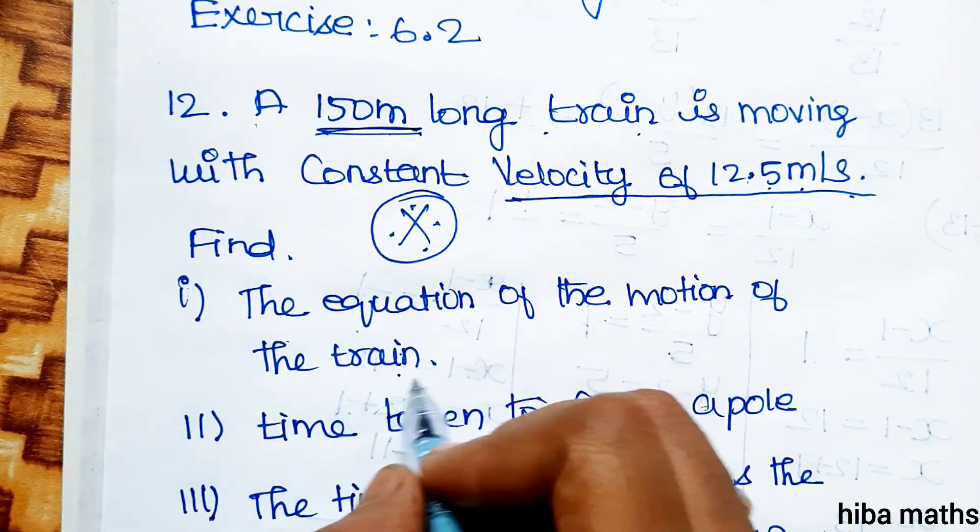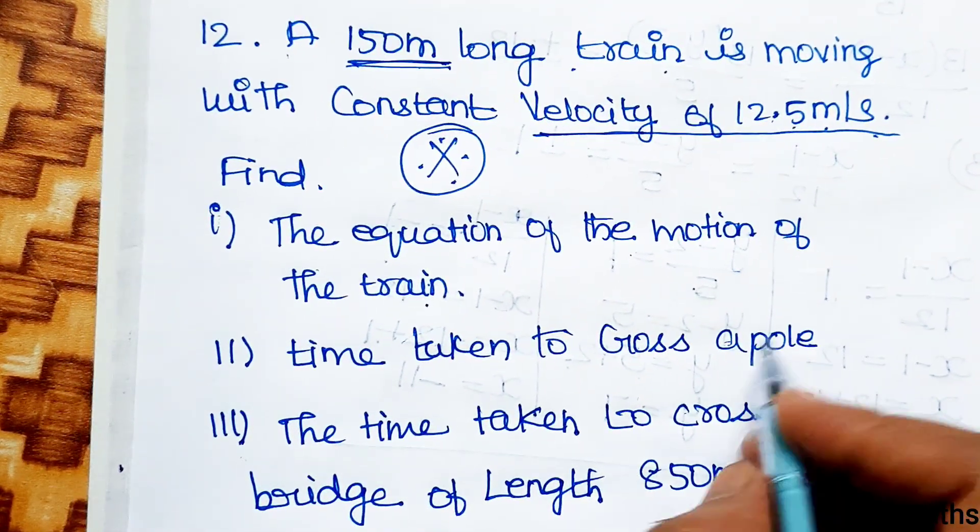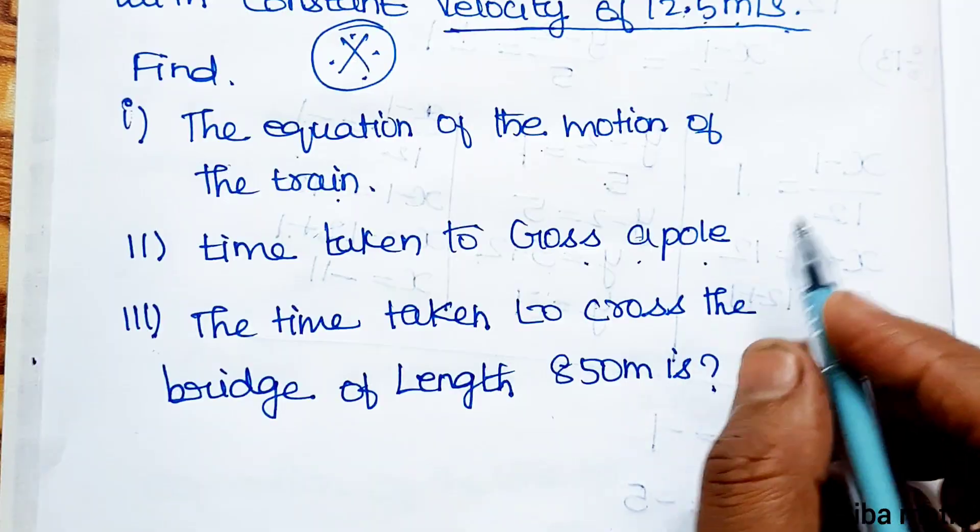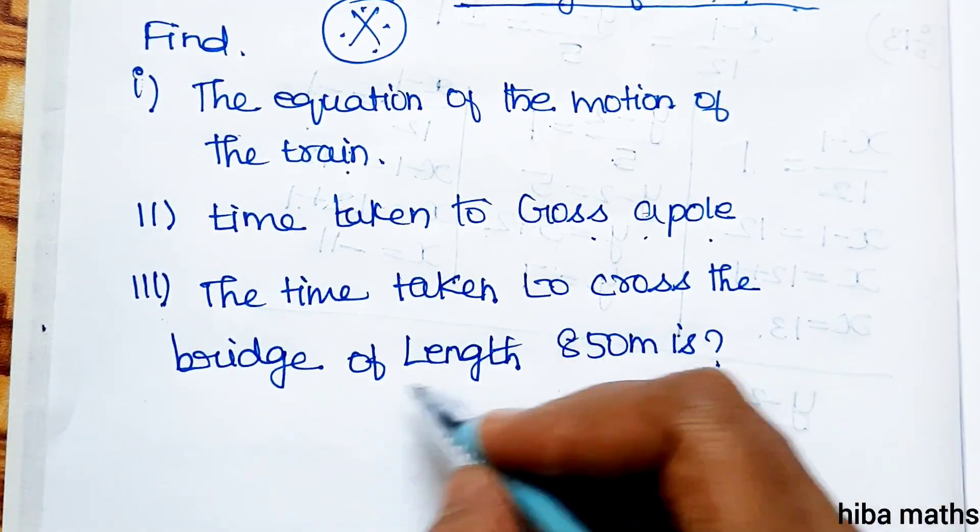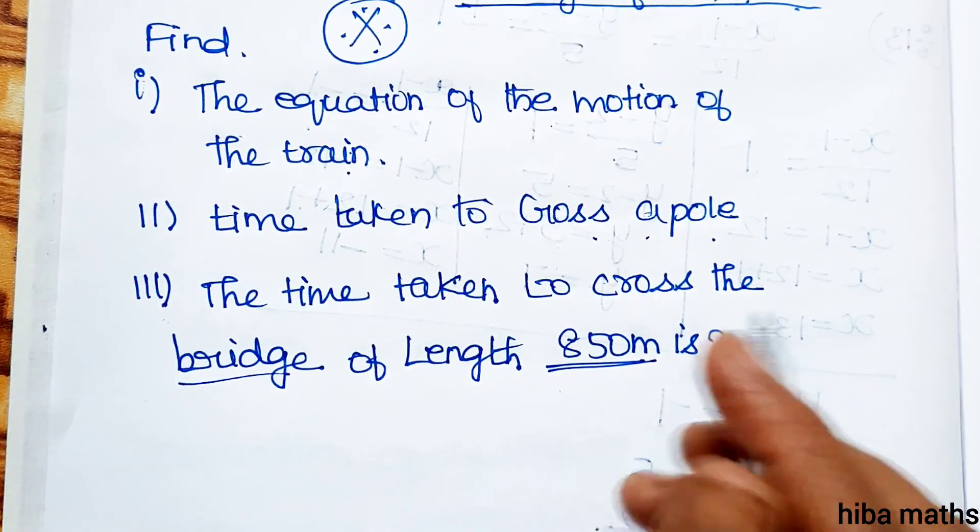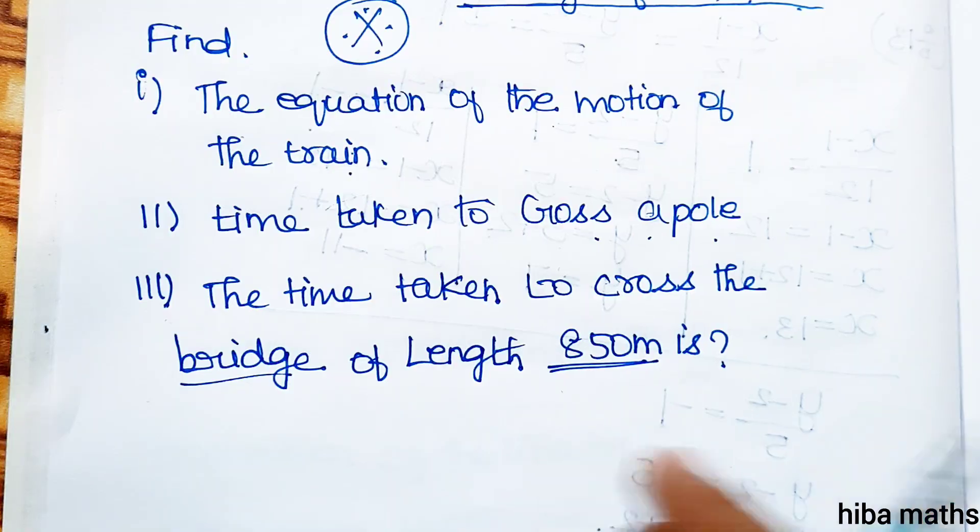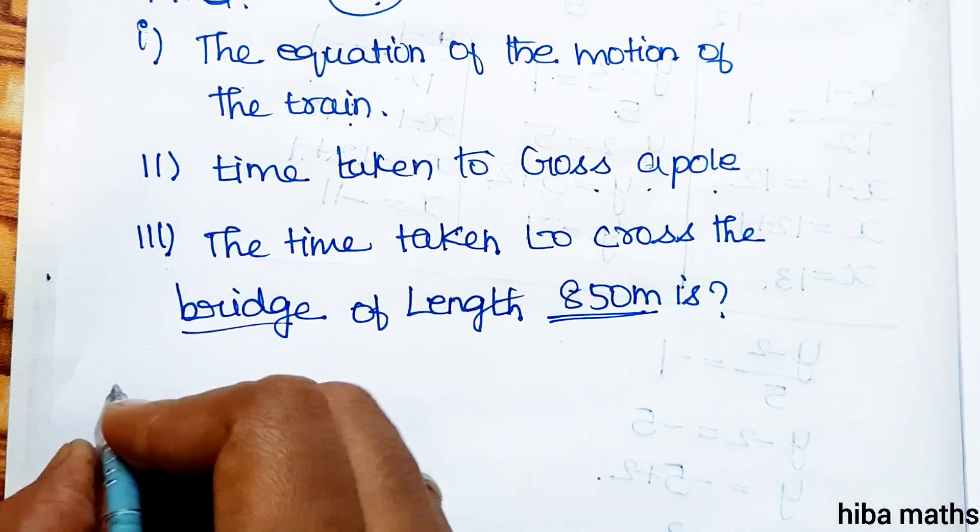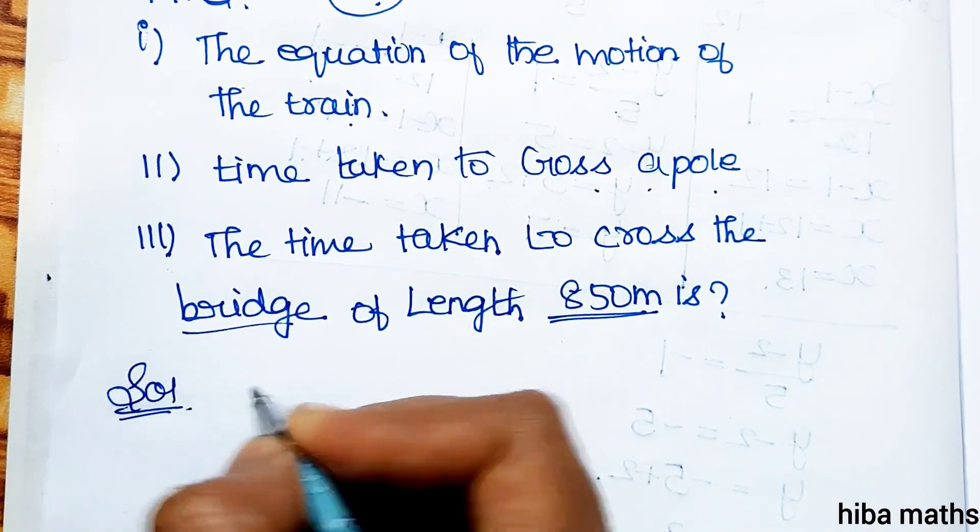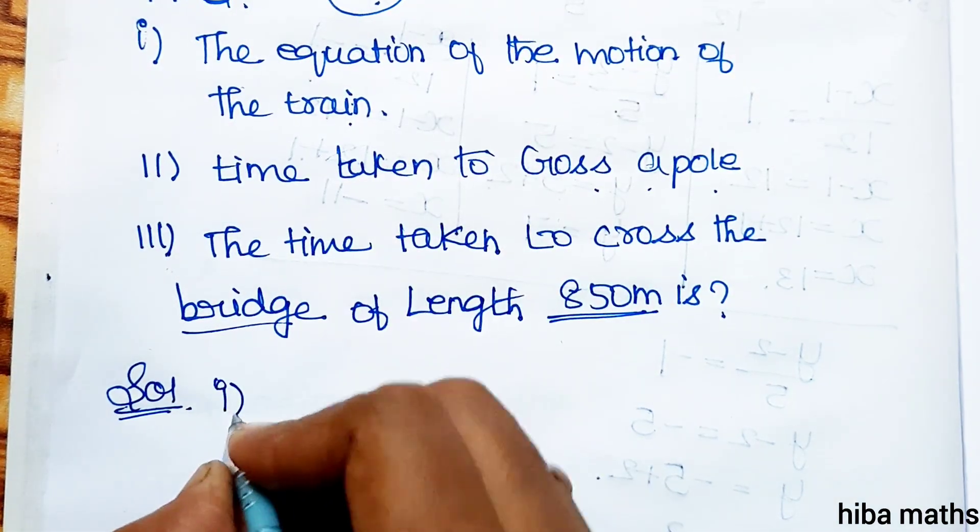Find: (i) The equation of motion of the train. (ii) Time taken to cross a pole. (iii) The time taken to cross the bridge of length 850m. And this is a repeated question, mark the important question. Solution: